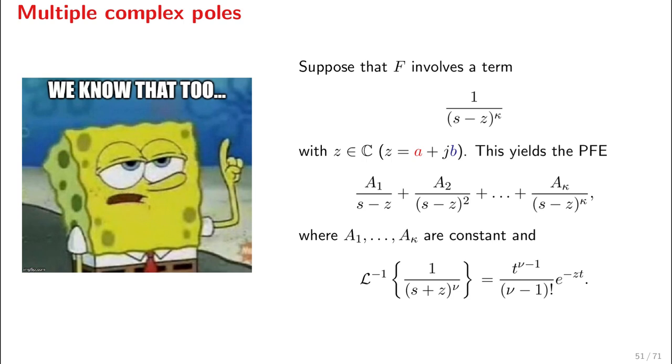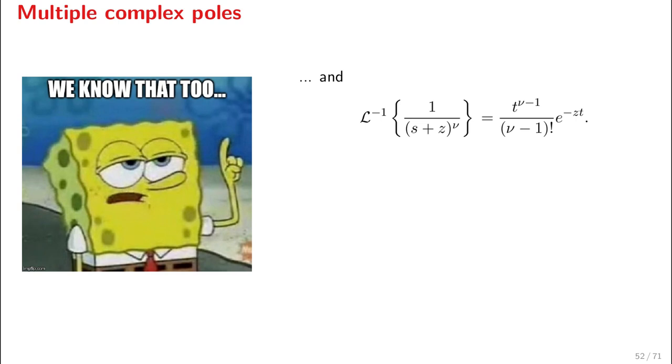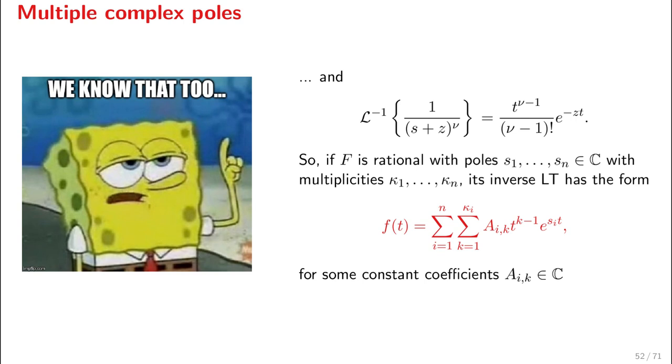Now if F is a rational function with poles s₁, s₂, and so on up to sₙ, which are complex numbers, and we have no zeros—so the numerator is a polynomial of degree zero, just a number—then we can apply this approach and the inverse Laplace transform of such functions will have the general form of powers times exponential functions.